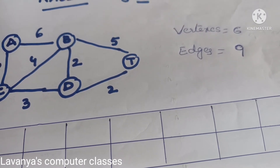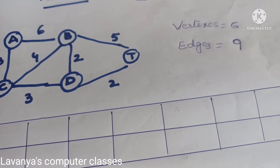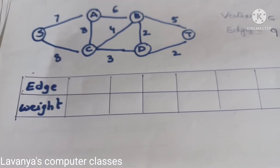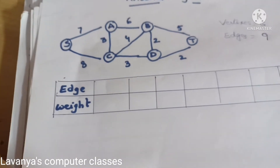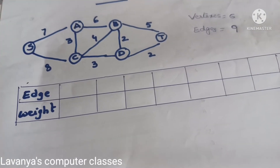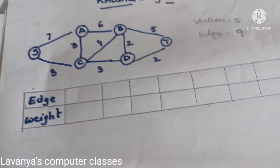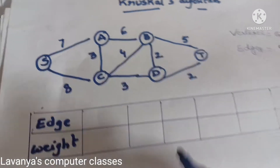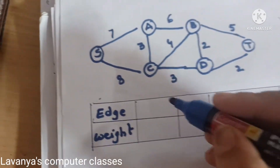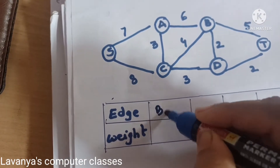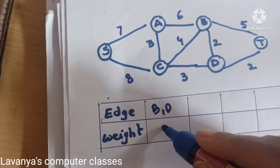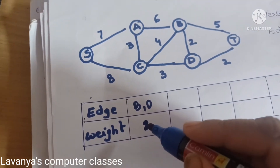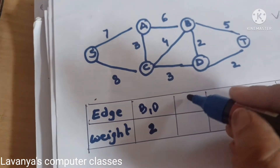For Kruskal's algorithm, I will take a graph with 6 vertices and 9 edges total. First, we prepare a table with edges and their weights, sorted with minimum weights first — in ascending order.